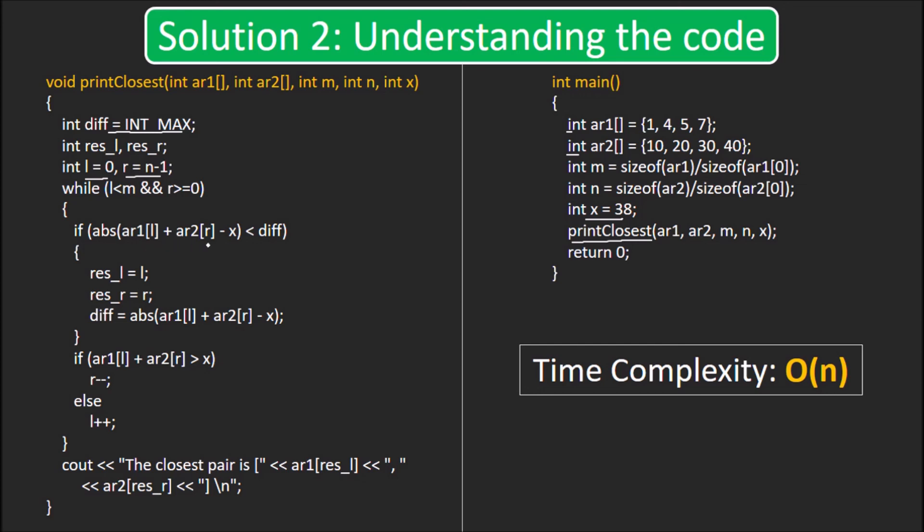Now, we check if the difference between sum and x is lower than the current minimum difference. If so, we update diff and store the pair in result variables. Now, we check if the sum was more than x, we do r-- and l++ otherwise as explained earlier. The pair with the minimum difference gets printed at the end. The time complexity of this solution is O(n) since we found the closest pair in a single pass.